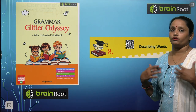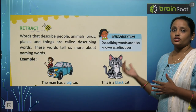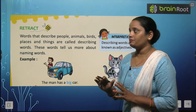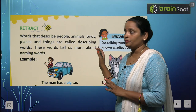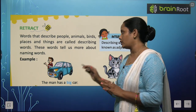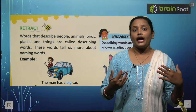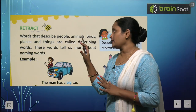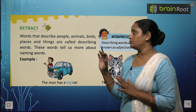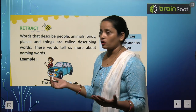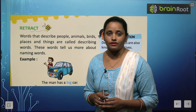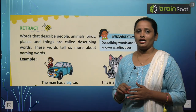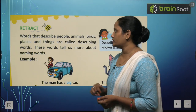We will learn about different words that describe a noun. Words that describe people, animal, bird, and place or thing are called describing words. Aise words jo kisi person ko, kisi animal ko, kisi bird ko, kisi jaga ko, kisi thing ko describe karte hai — unke baare mein bataate hai — aise words ko hum describing words kehte hai.